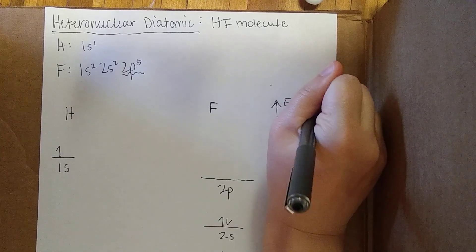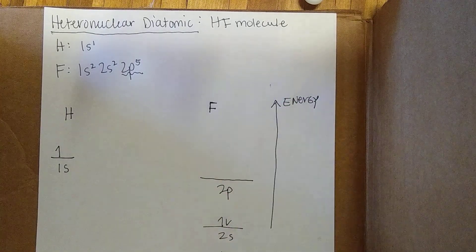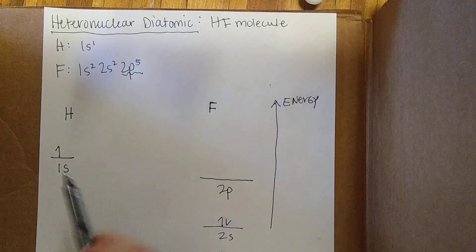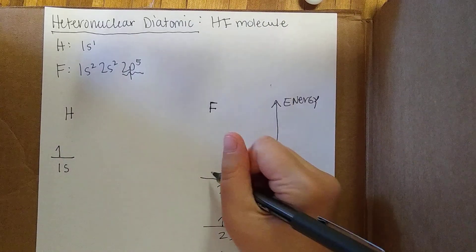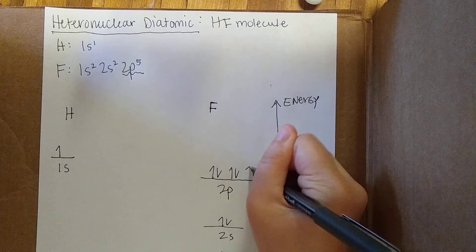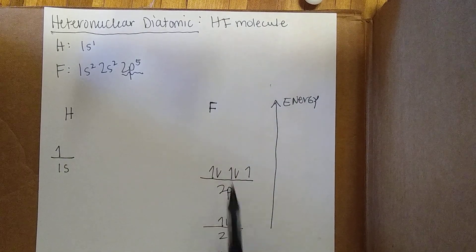Remember, energy goes this way, so more energy toward the top of the page. This 2p level is lower than this 1s. And of course, let's fill in this. So the 2p has these five electrons sitting in it.